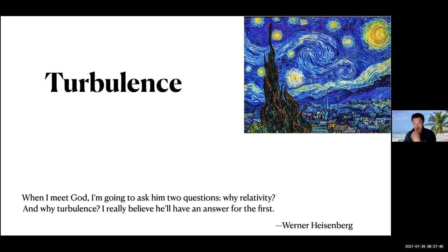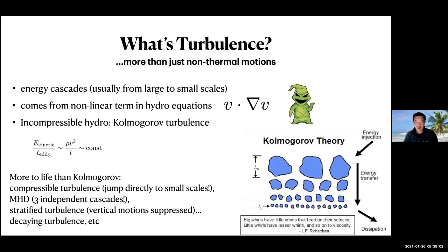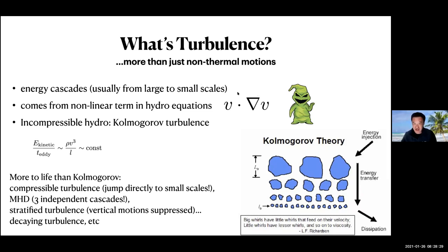Turbulence is a famously hard problem. Werner Heisenberg said he thought God understood relativity but not turbulence. What is it? Joel Brentman reminded us that astronomers just think of turbulence as anything that's not thermal — all the bulk motions we see in spectra. But strictly speaking, turbulence involves an energy cascade from large to small scales due to the nonlinear term in the hydro equations. This nonlinear term is responsible for a lot of head-scratching and trillions of hours of CPU time. Without it, we'd be like in quantum mechanics or E&M — linear systems where you can write basis functions and use superposition.